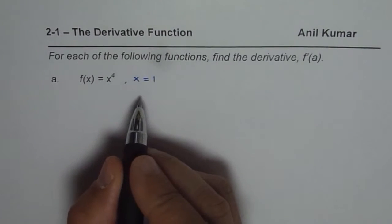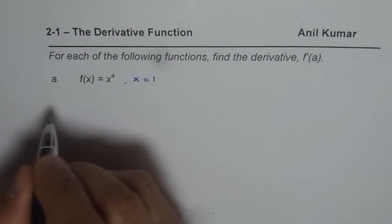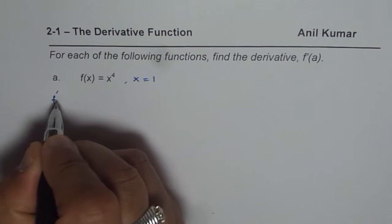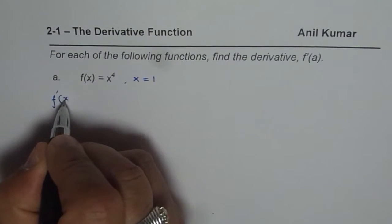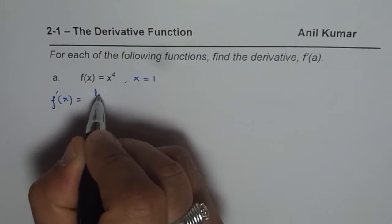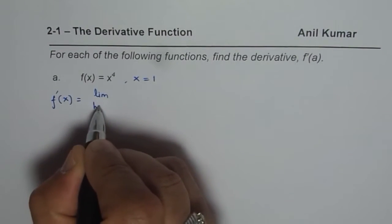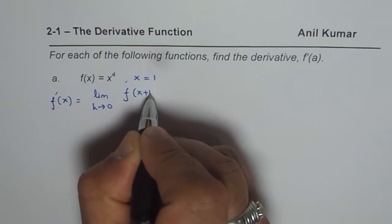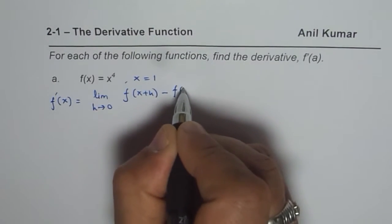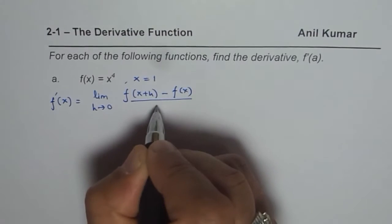So we will use the first principle and the very basic definition of derivative, which is f dash. The definition is f dash x in general equals limit when h approaches 0 for the function f(x+h) minus f(x) over h.